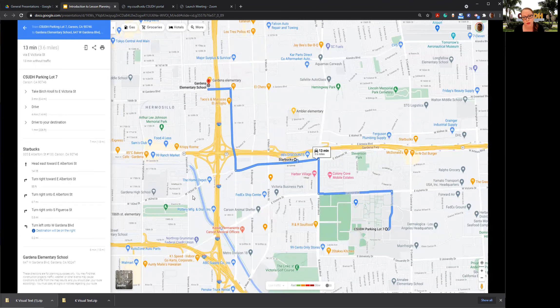In order to understand this lesson planning process and all these beginning steps that go before the lesson planning, I want to use an analogy. Let's say we're going to take a short road trip somewhere we haven't been before. I mapped out how we would get from our university, parking lot seven, to Gardena Elementary School. You've got to go do some field work. You've never been there before.